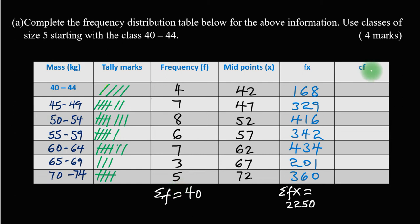Then we have the last column, which is the cumulative frequency column. We add the frequencies one by one cumulatively: we start with 4, 4 plus 7 is 11, 11 plus 8 is 19, 19 plus 6 is 25, 25 plus 7 is 32, 32 plus 3 is 35, and finally 35 plus 5 is 40. We have 40 adults in our case.